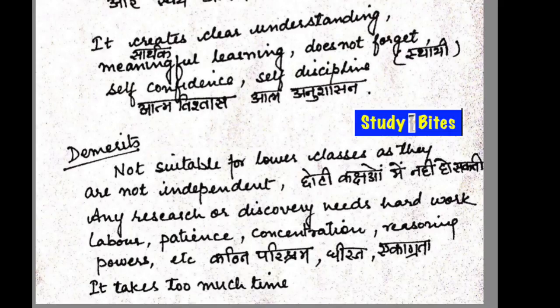Because so much time is consumed in discovery, students will not be able to cover much of the syllabus. In the Heuristic Method, coverage of the curriculum is slow — it is not practical for students given the demands of our education system.